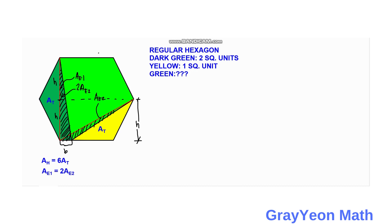Now we focus on the dark green region. The dark green region is given with an area of 2 square units. It equals area T plus the area of the small triangle E1. Since area E1 equals 2 times area E2, we can substitute that in. This gives us our first equation.